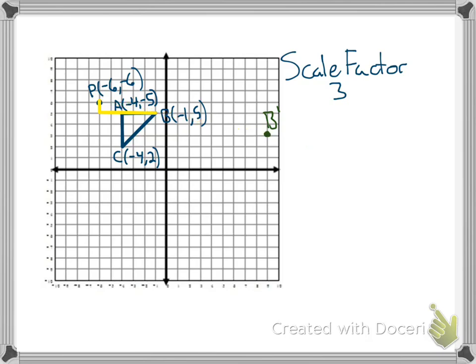I'll do the same process again, this time for C. To go from P to C, down 4 over 2. So, I'm going to do that once, twice, 3 times, which gets me to my new point for C. We call that C prime right there. That's 3 lengths of P to C.